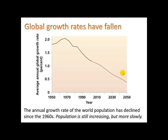We do know that global growth rates have fallen. That peak happening in the mid-1960s, around 1965, reached 2.1% — that's when the population was getting bigger the fastest. Since then, the rate of population growth has declined. Right around 2013, today's growth rate is 1.1%. So population is still increasing, but more slowly.